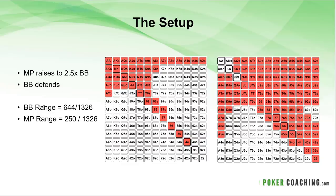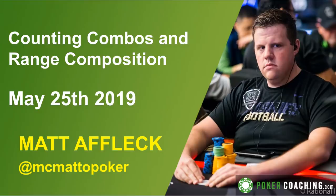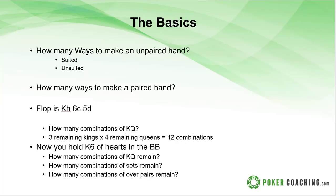Out of 1,326 total combinations, the big blind range has about 644 combinations — roughly 50% of hands. The middle position range is about 18%.